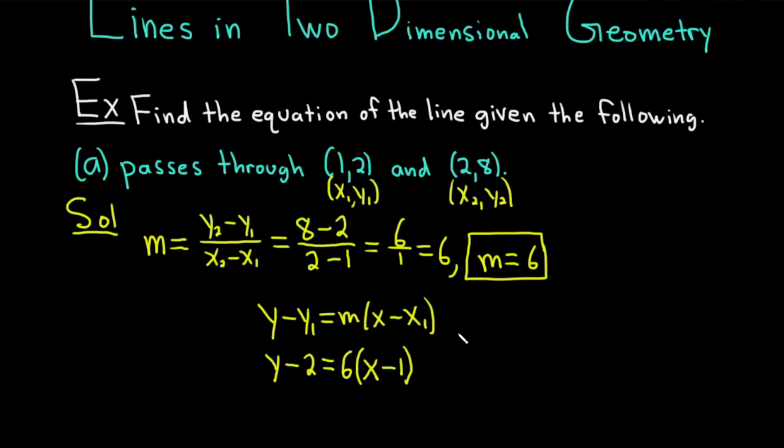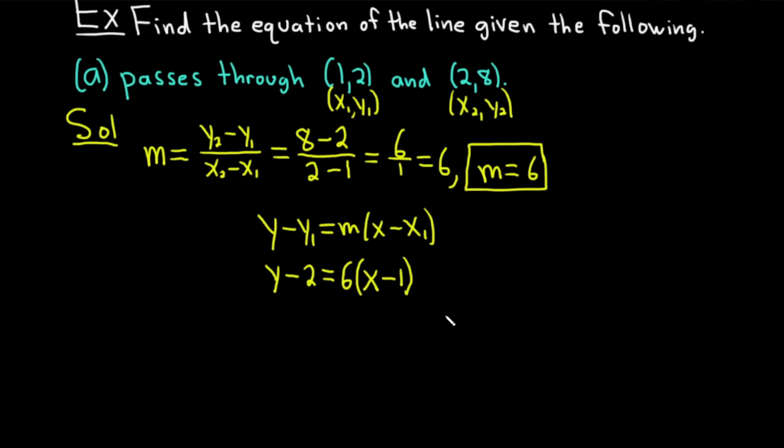At this point, you know, you could leave it like this, but most people want you to simplify and solve for y. It's usually what people do. So 6 times x is 6x, and then 6 times negative 1 is negative 6. And we can add 2 to both sides. And we end up with y equals 6x minus 4. And that would be the equation of the line.